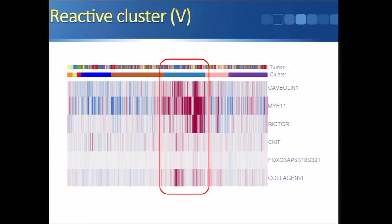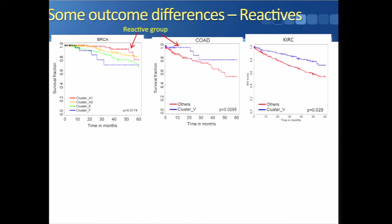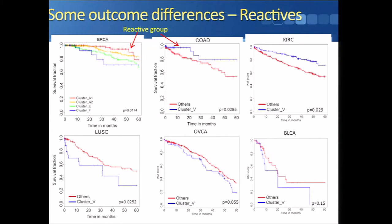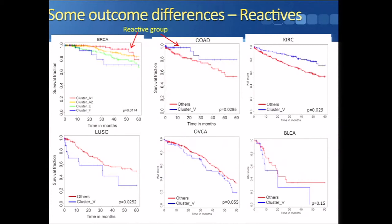The reactive cluster had predominantly breast cancers but also other disease types. We can see caveolin-1, MYH-11, RICTOR, and collagen-6 as markers for the reactive cluster. In breast, colon, and kidney cancer, reactive samples have good prognosis. However, in lung squamous, ovarian, and bladder cancers, reactives tend to do worse. We don't know why, but the observation is that reactives do distinguish from others and can have either good or bad prognosis depending on disease type.